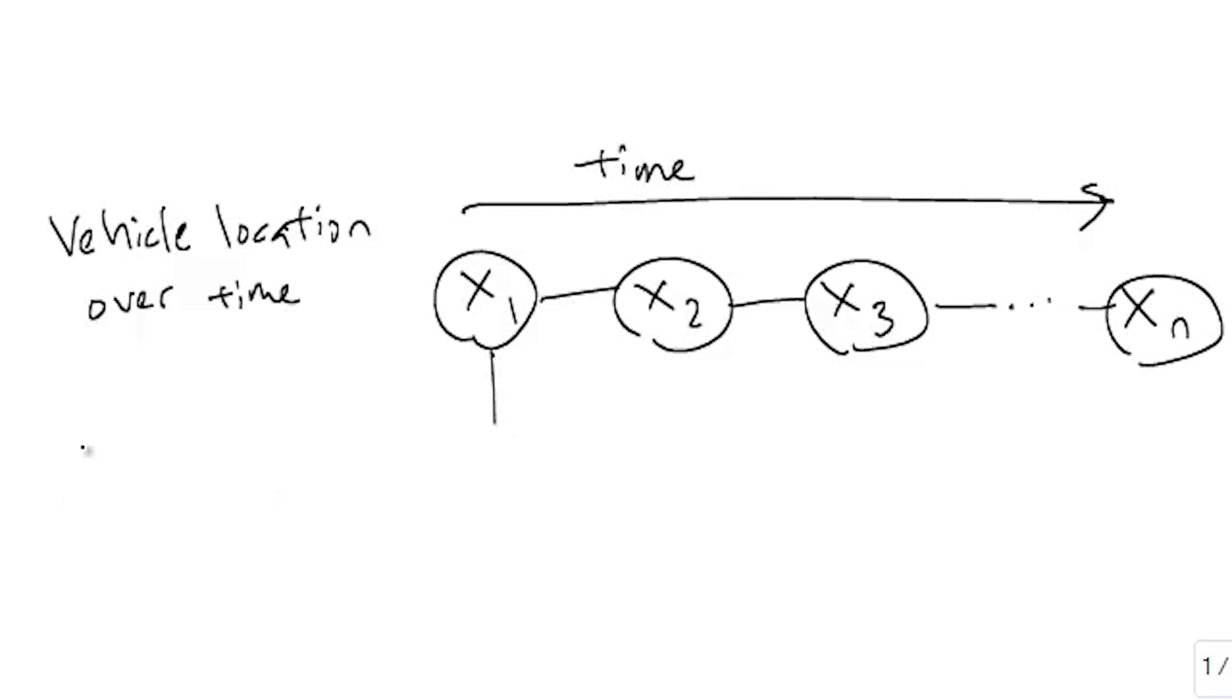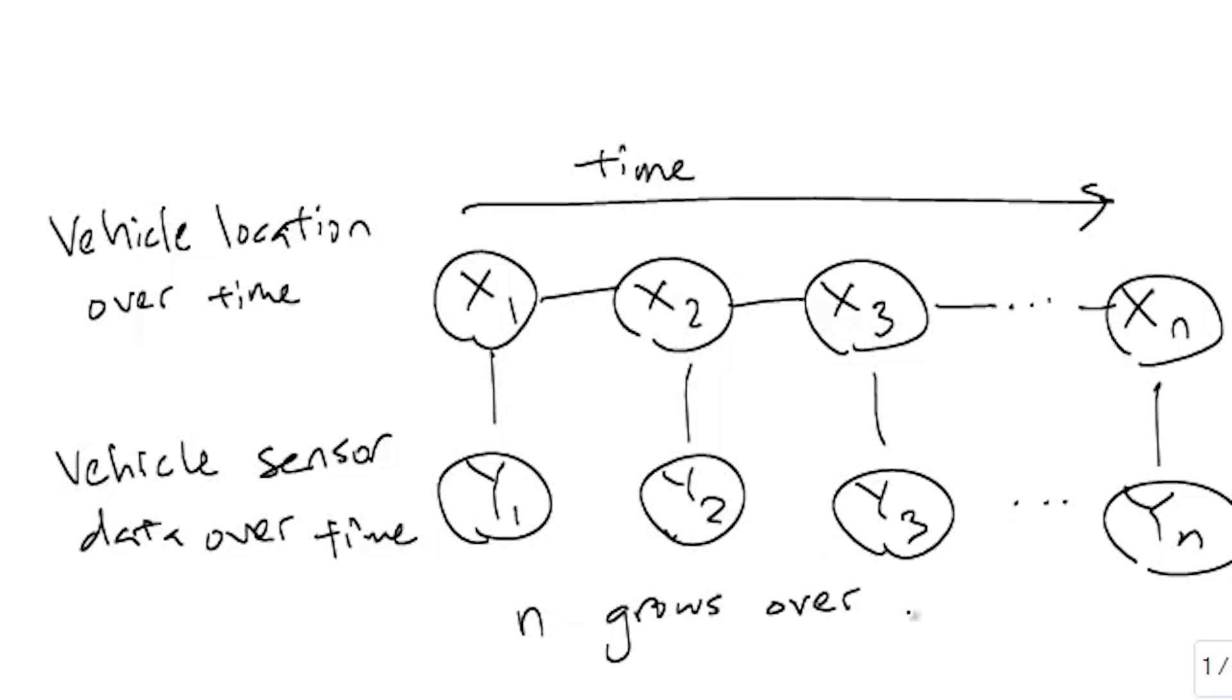In the second section, we introduce a data structure for representing probabilistic models called a graphical model. On a computer, graphical models can be stored efficiently and they enable us to solve many large scale inference problems.